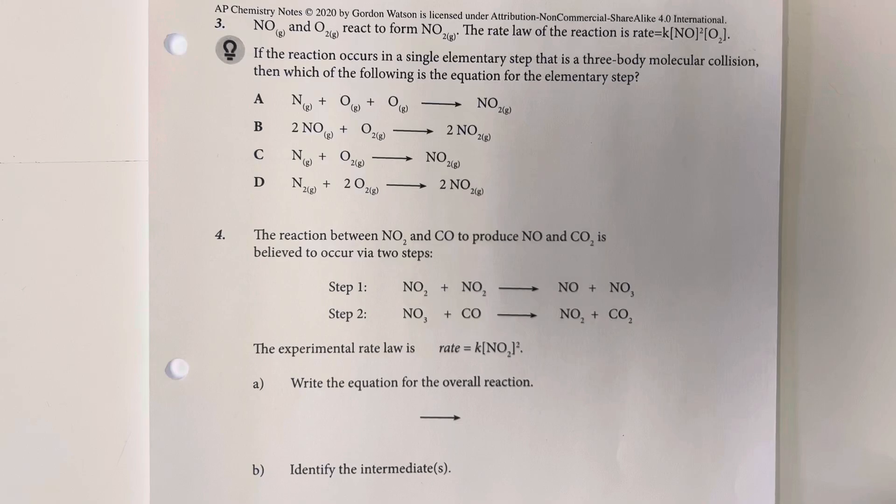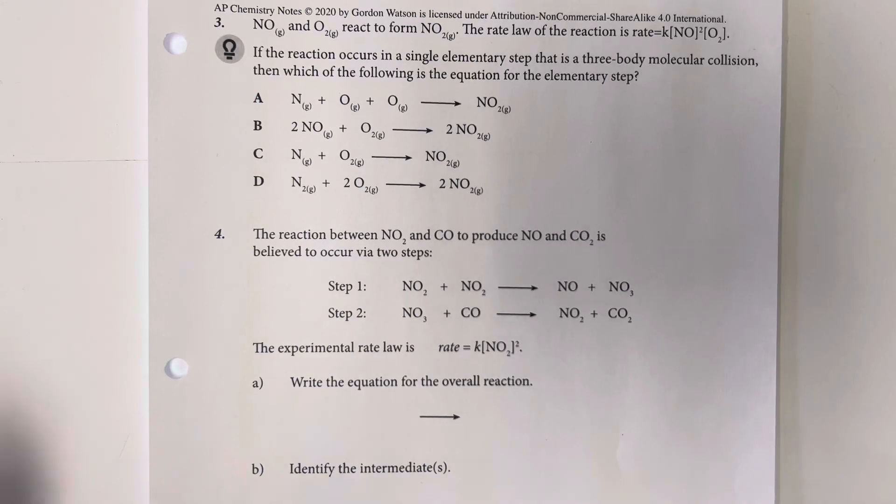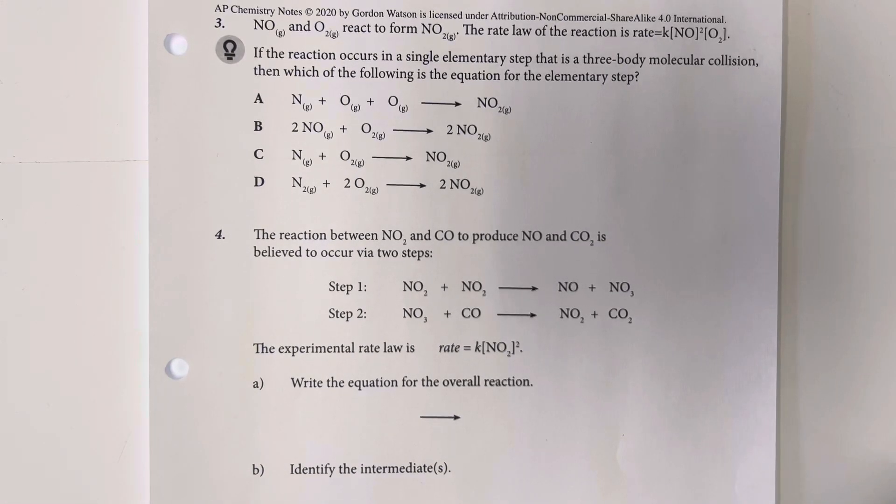Nitrogen monoxide and oxygen react to form nitrogen dioxide. The rate law for the reaction is K times nitrogen monoxide squared times oxygen. If the reaction occurs in a single elementary step that is a three-body molecular collision,